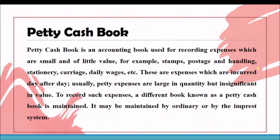The petty cash book may be maintained on the ordinary system or by the imprest system. The imprest system means the system where a bulk amount is given at the beginning to meet expenses. After spending for a particular period, we utilize this account to find the balance. Every amount spent is also recorded separately to analyze where more spending is occurring. The cashier receives a bulk amount at the beginning to record all petty expense transactions.